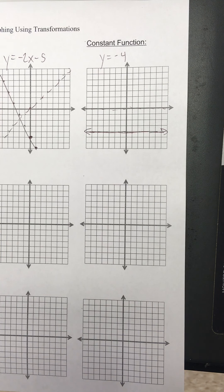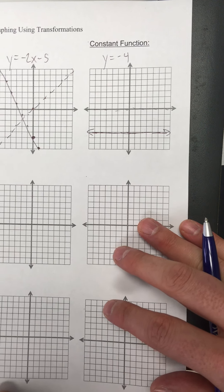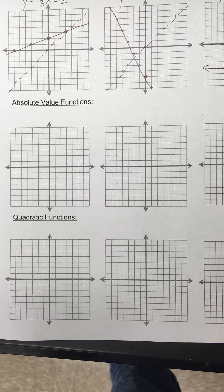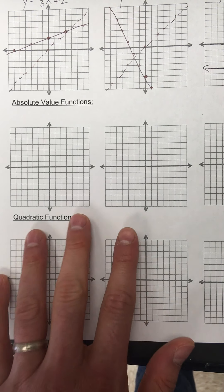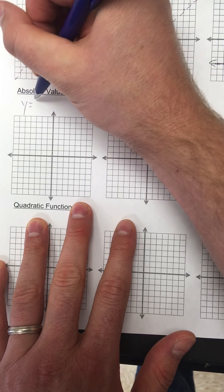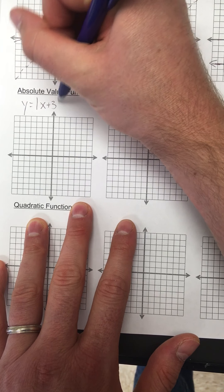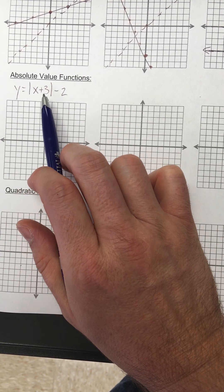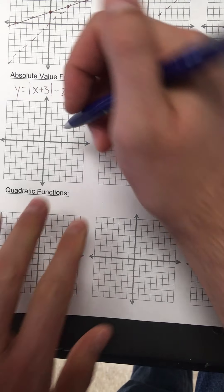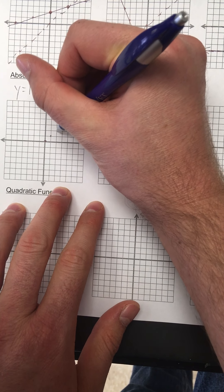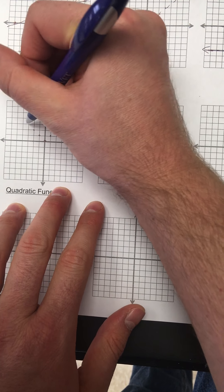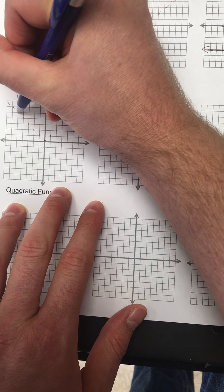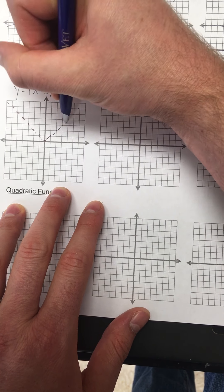Alright, those are easy. Now let's look at our other two types of functions — absolute value functions. What does the equation have to have to be an absolute value equation? It has to have those absolute value bars. So if I have y equals absolute value of (x plus three) minus two. Let's start with our parent function. Absolute value makes a v-shape, starting at (0,0), going up one over one in both directions. Here's the parent function for an absolute value function.